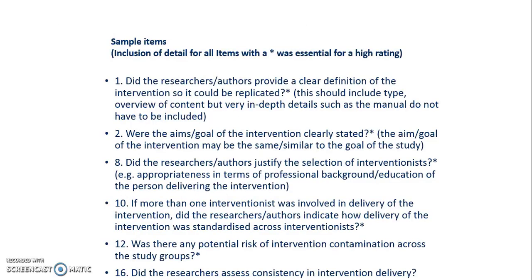This slide presents a sample of the items in the intervention evaluation instrument. Essential items were highlighted with an asterisk. All items with an asterisk were considered essential for a high quality rating. For example, did the researchers or authors provide a clear definition of the intervention so it could be replicated? This was considered essential for a high quality rating on the scoring system.